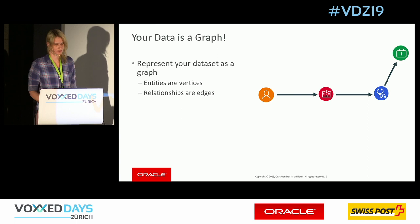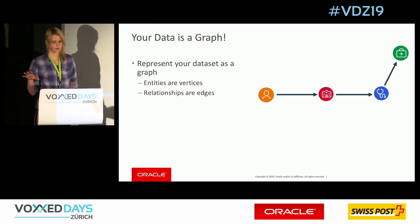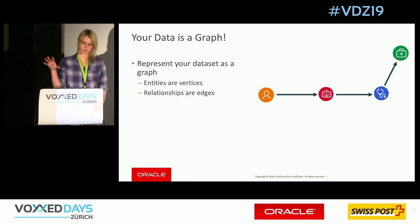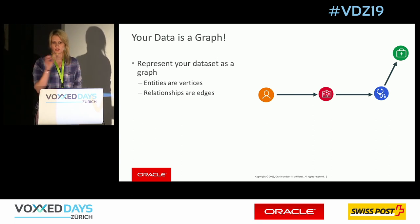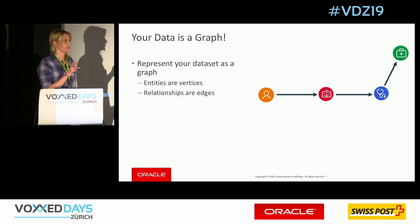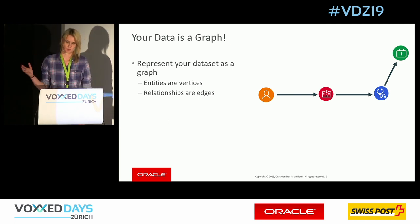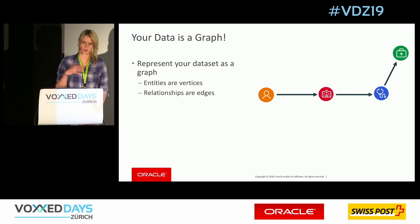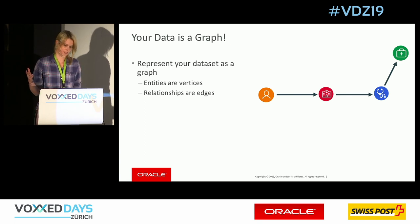So let's start with the basics. What is a graph? When we talk about graph, we talk about entities that are vertices and relationships in between that are edges. Thinking about the healthcare domain, we can have entities like patients who are admitted at a hospital, and for example, diagnosis or treatments.